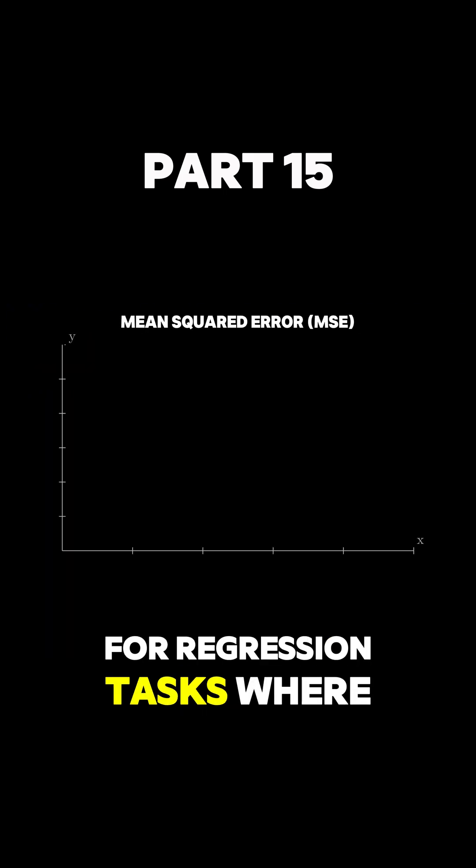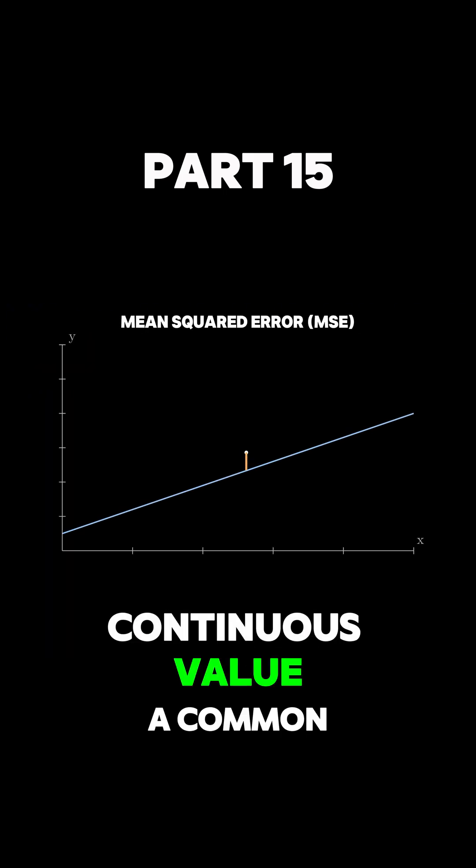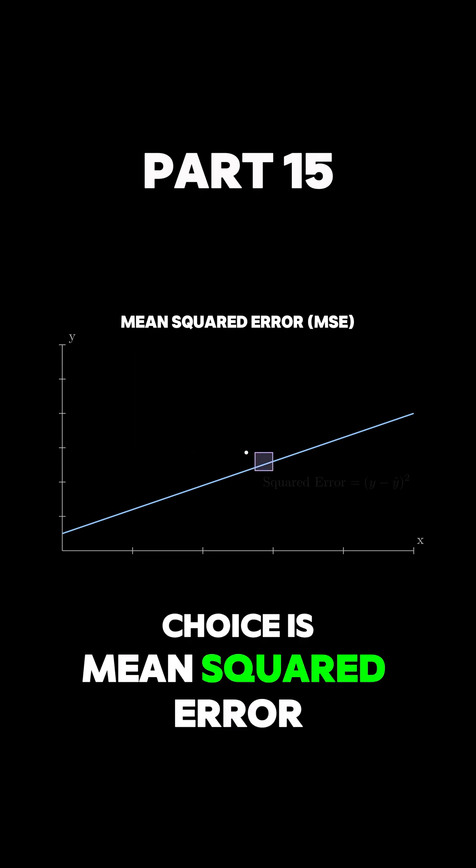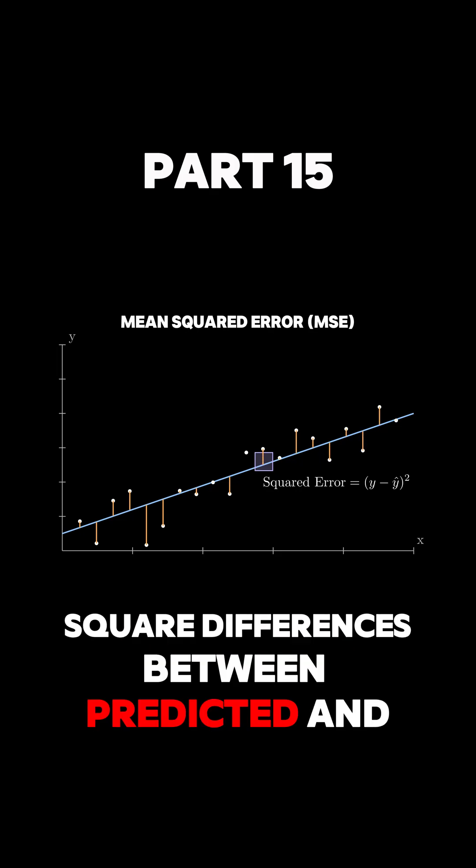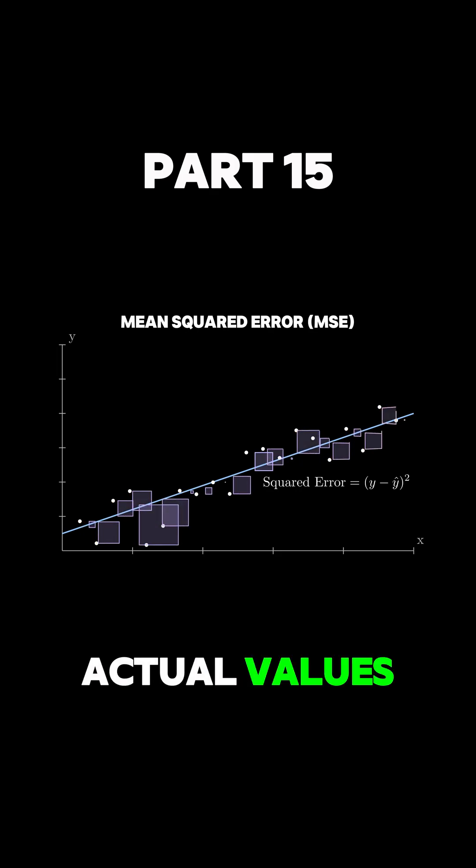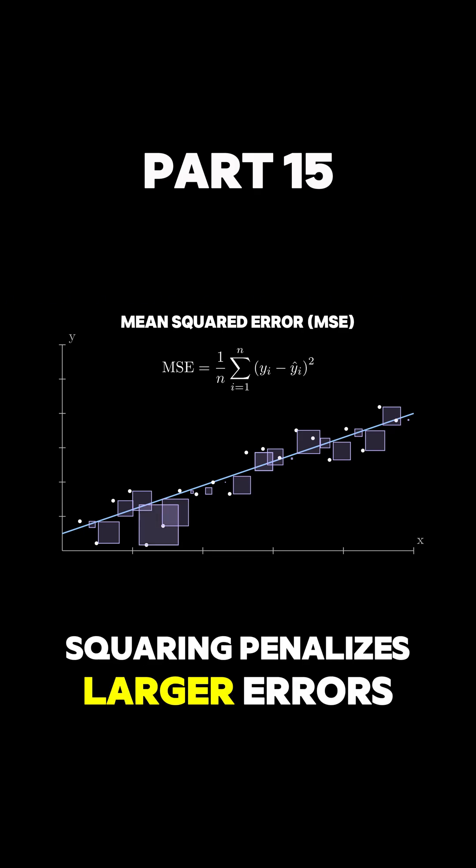For regression tasks, where the output is a continuous value, a common choice is mean squared error. It is calculated as the average of the squared differences between predicted and actual values. Squaring penalizes larger errors more heavily.